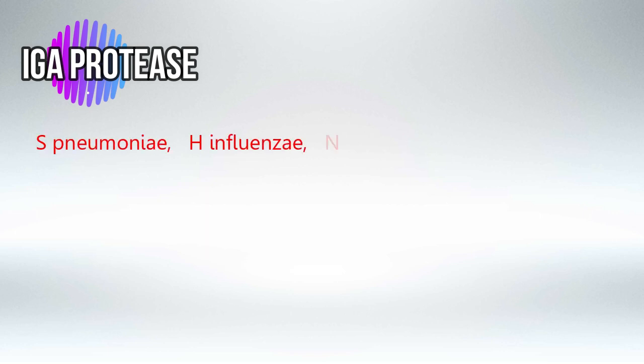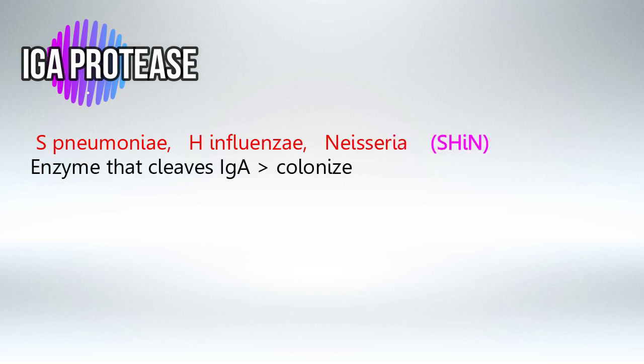Next we have Immunoglobulin A Protease, an enzyme released by Streptococcus pneumoniae, Haemophilus influenzae, and Neisseria. To remember these bacteria, just remember the word 'Chen.' This enzyme will cleave Immunoglobulin A, which allows the bacteria to colonize the respiratory and GI mucosa, since IgA normally prevents bacteria from attaching to those mucosal surfaces.